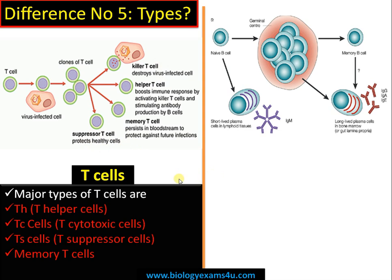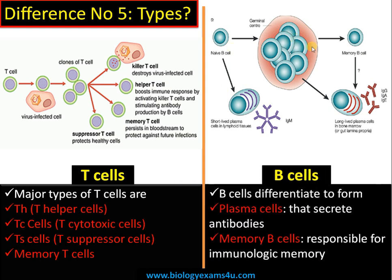In the case of B cells, differentiation forms plasma cells involved in antibody production. There are two types of plasma cells: short-lived ones that often secrete IgM antibody, and long-lived ones in the bone marrow that secrete antibodies like IgG, IgA, and IgE. The second type of cell is the memory B cell, responsible for immunologic memory — when a pathogen comes a second time, the defense mechanism recognizes it quickly and mounts a rapid response. Memory B cells are often long-lived.